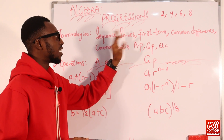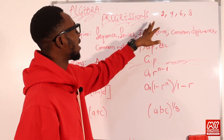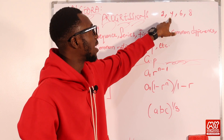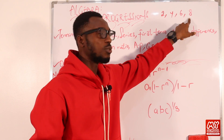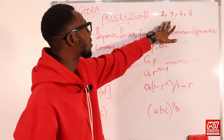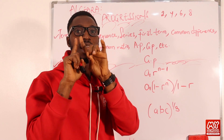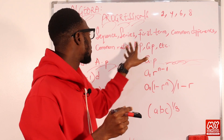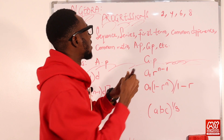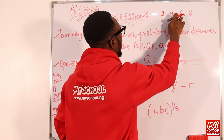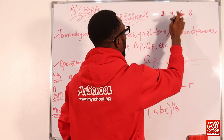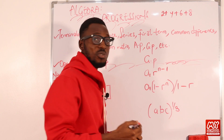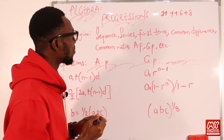We have a series. A series is actually a sequence whose terms — first term, second term, third term, fourth term — are connected with the plus sign. So it's actually an added sequence. A series is an added sequence. So instead of having commas separating the terms, you have plus signs. That's what makes a series.